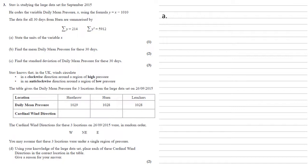For part A, we need to state the units of the variable x. We do this by looking at the large dataset. We find the column for daily mean pressure, and the units are written there. They are hPa or hectopascals.